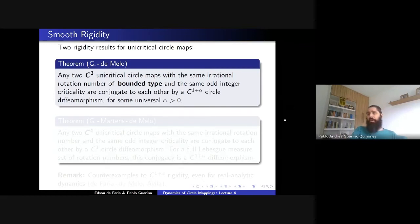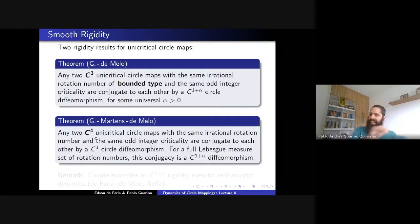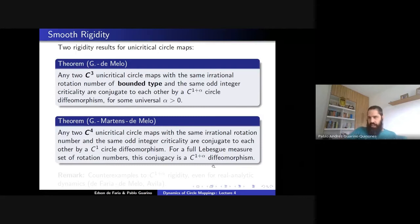This is for bounded combinatorics. Since bounded type numbers have zero Lebesgue measure, you want to get rid of this condition. The good news is that you can, but you need one more derivative. The second theorem is: for C⁴ critical circle maps with a single critical point and any irrational rotation number, they are conjugate by a C¹ diffeomorphism. Moreover, for Lebesgue-almost every rotation number, the conjugacy is actually C^{1+α}.